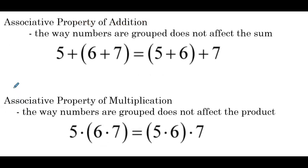The associative property of addition states the way numbers are grouped does not affect the sum. So 5 plus the quantity 6 plus 7 is equivalent to the quantity 5 plus 6 plus 7. The associative property of multiplication states the way numbers are grouped does not affect the product. So 5 times the quantity of 6 times 7 is equivalent to the quantity of 5 times 6 times 7.